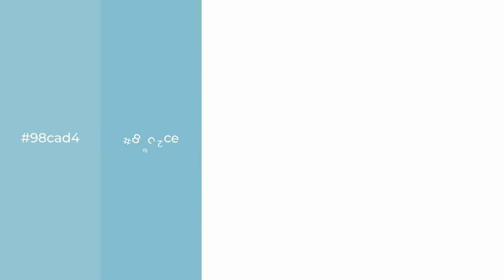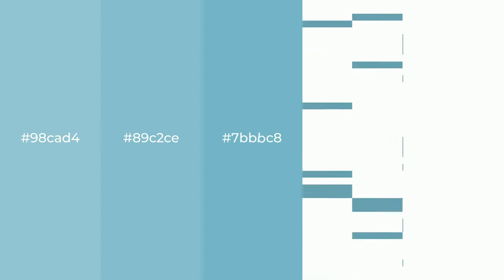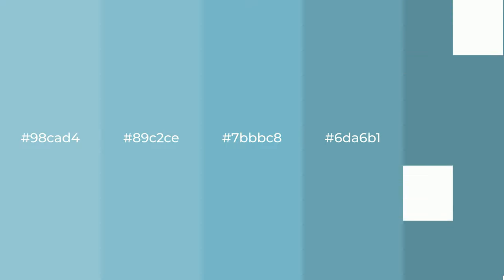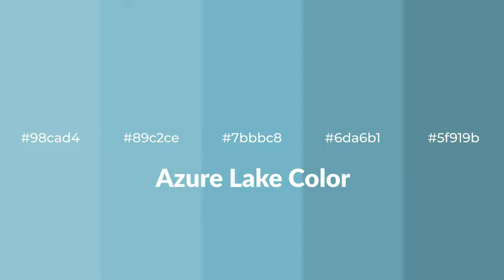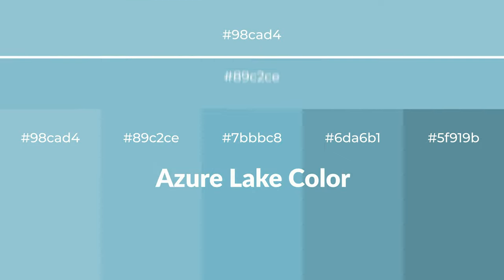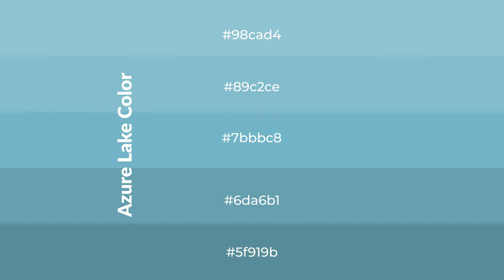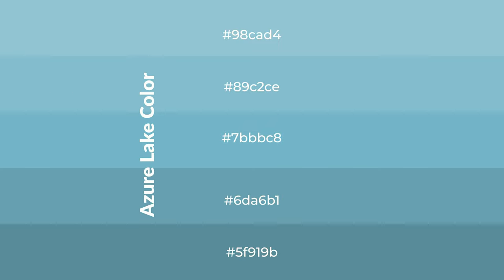Cool shades of azure lake color with blue hue for your next project. To generate tints of a color, we add white to the color. Tints create light and exquisite emotions. To generate shades of a color, we add black to the color. Shades are used in patterns, 3D effects, and layers — they create depth and drama.